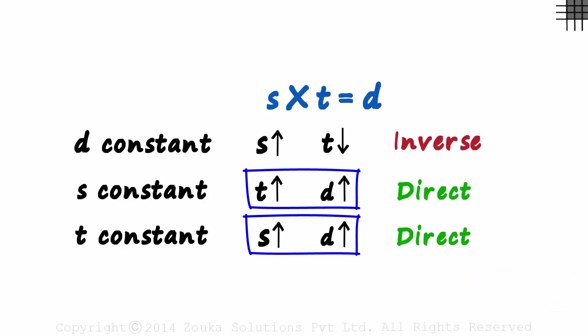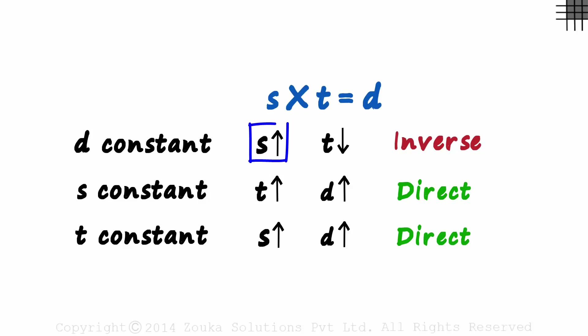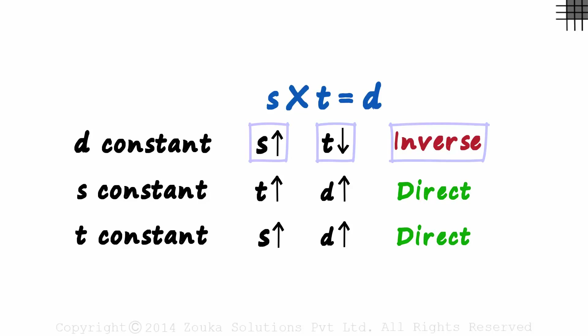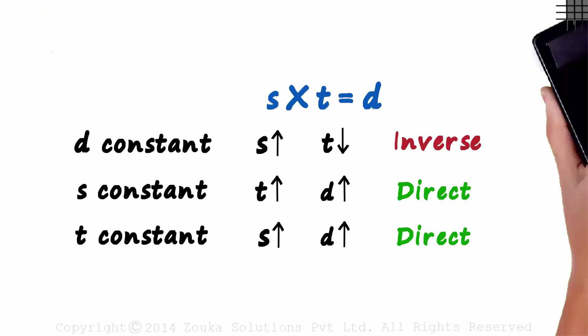Both increasing or both decreasing is direct variation, and one increasing while the other decreases is inverse variation. This is important and you need to understand this well. Let's take a few more examples.